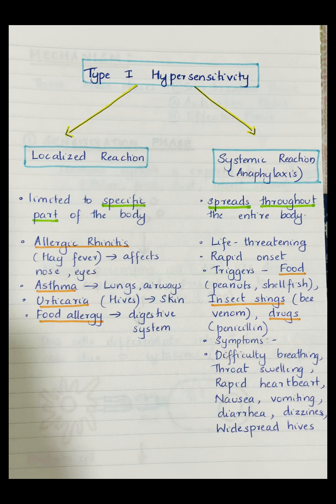Food allergies affect the digestive system and can cause nausea, vomiting, stomach cramps, or diarrhea. As you can see, the localized reaction affects only a specific part of the body.